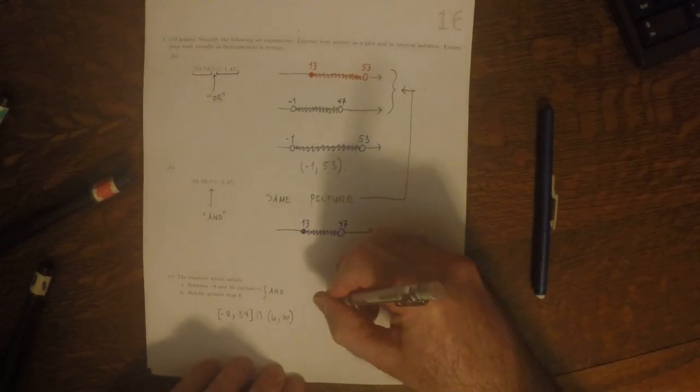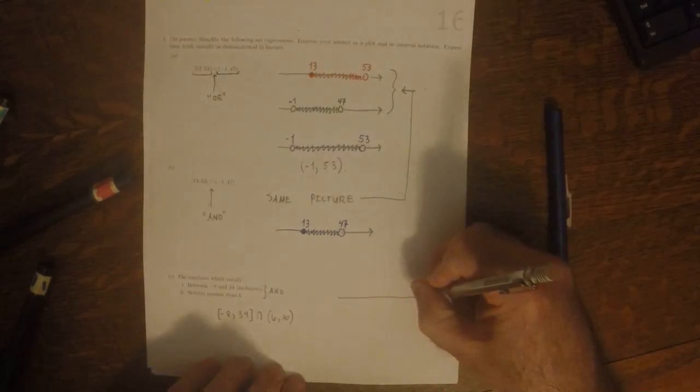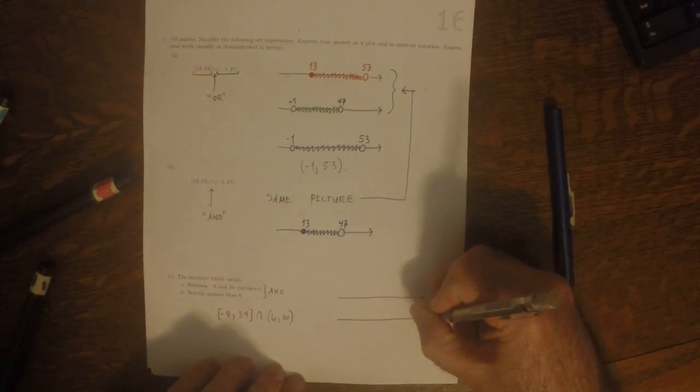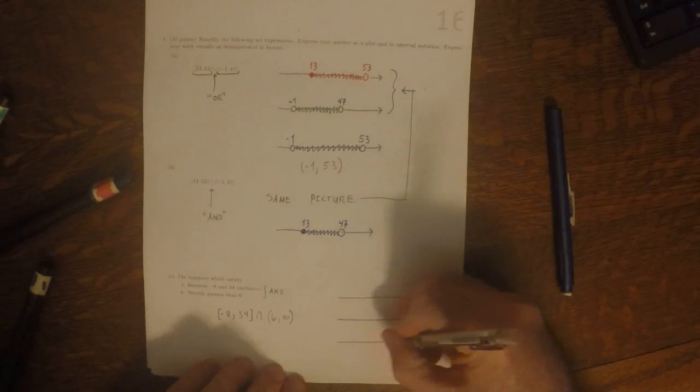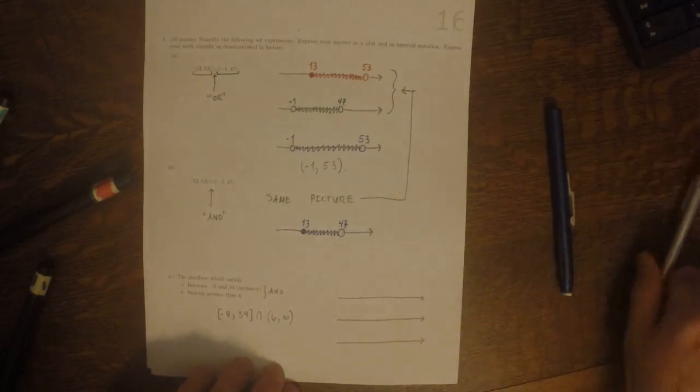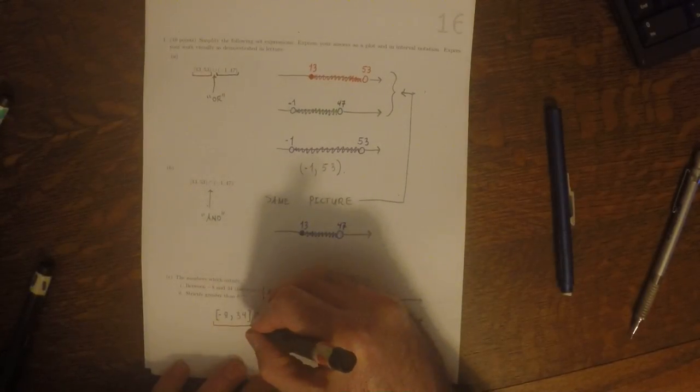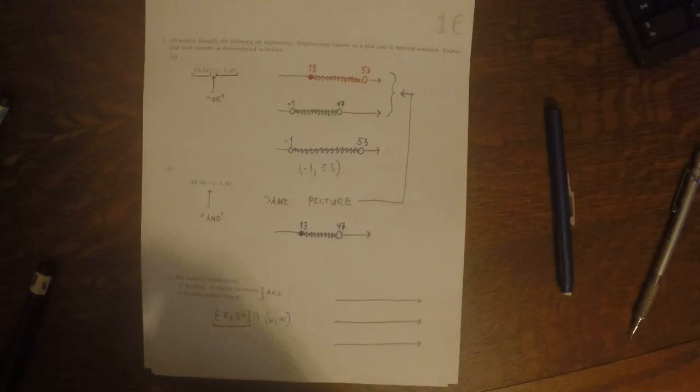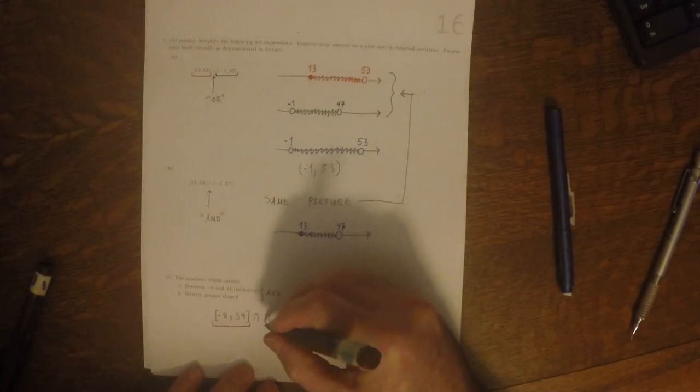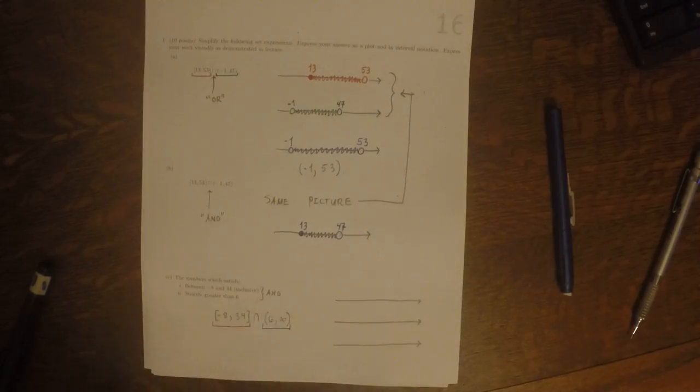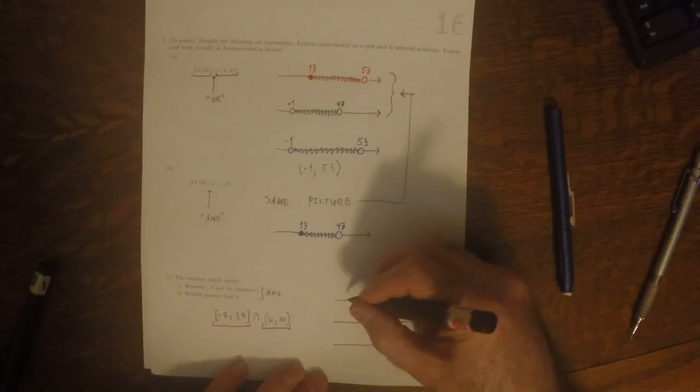Calling this the red set and this one the green set. Of these four possibilities, negative 8 is the smallest and it's included. So negative 8.